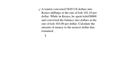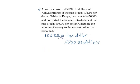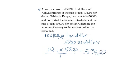The first rate was 102.10 Kenyan shillings equal to 1 US dollar. So we ask ourselves: what about US$5,820? By cross multiplication, we will have 102.1 multiplied by US$5,820 divided by 1. If you multiply 102.1 by 5,820, you will get 594,222 Kenyan shillings.